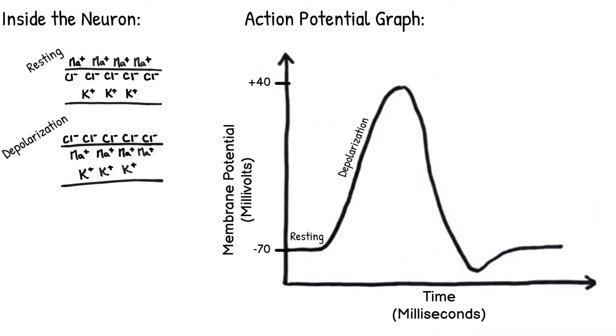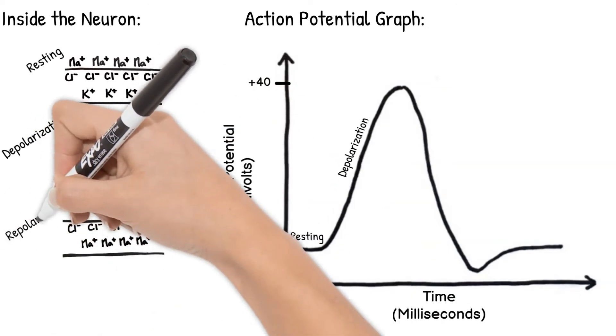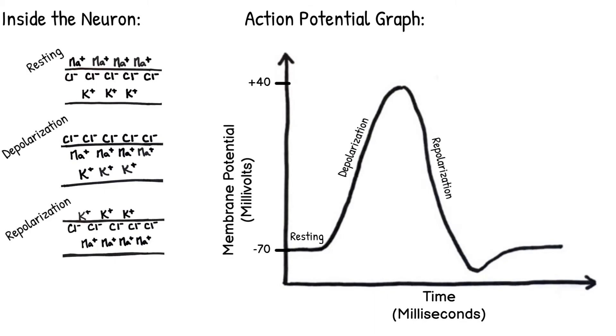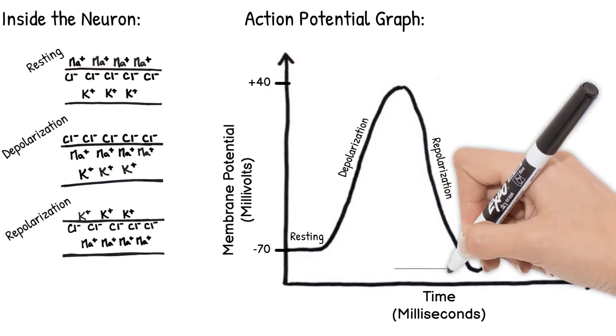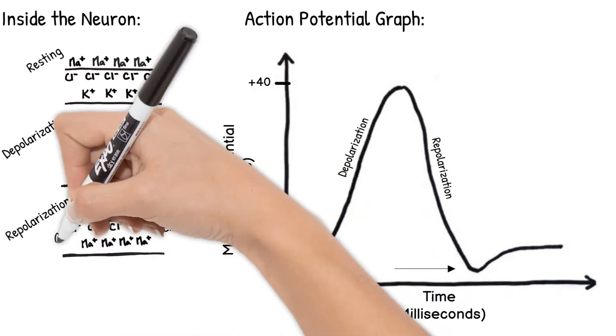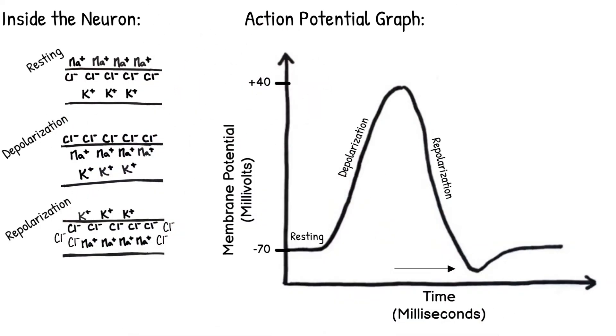Then those close, the potassium gates open for repolarization, and the charge will drop. It is actually going to drop a bit below our negative 70 millivolts resting. Potassium gates are slow to close, and extra chloride ions rush through it. This is called hyperpolarization.